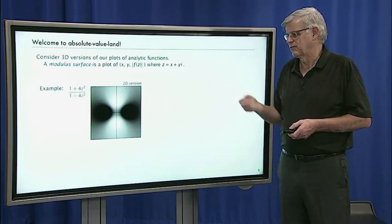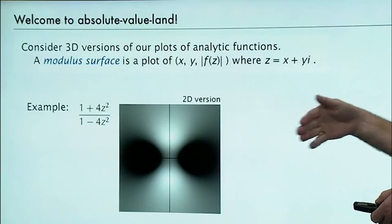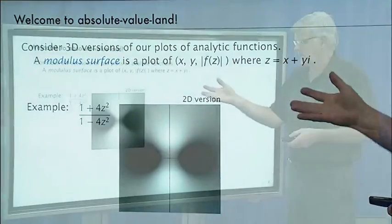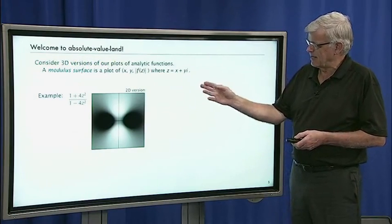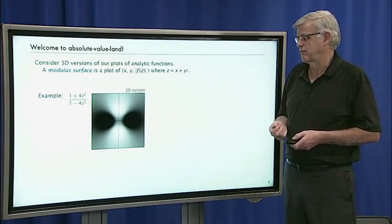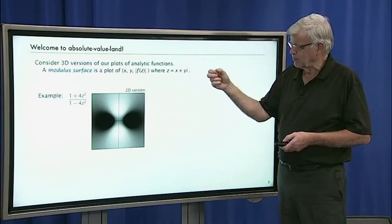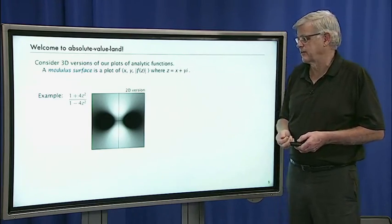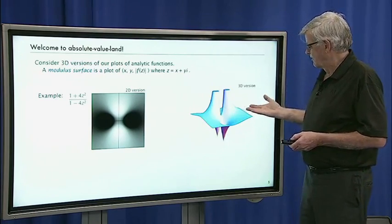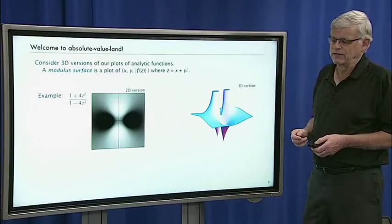For example, here's a plot of (1 + 4z²)/(1 − 4z²), where the blacker a point is, the higher the absolute value of the function. With a plot like this, we can see that at z = ±1/2 where the denominator vanishes, the absolute value of f(z) gets bigger and bigger. Near i/2 and −i/2 where the numerator goes to zero, it gets to be white. In three dimensions, this plot has a much more fascinating shape — and we'll be looking at properties of these modulus surfaces to help understand the saddle point method.